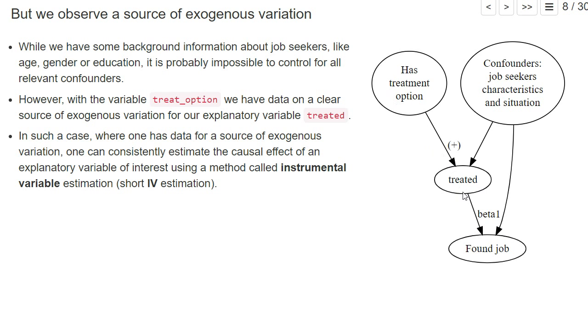This is then a variable that generates variation in whether the subject is treated or not, because only those with the treatment option could in the end be treated. And not only do we know that there's a source of exogenous variation, we also have data for it. We observe for each subject whether it has the option for the treatment or not.